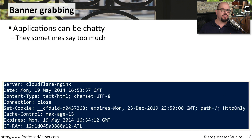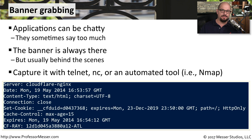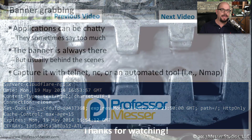Some applications provide a lot of information about themselves when you first connect to them — their name, what version of software they're running, and more information about the server they're running on. These are called application banners. They're usually always there but we don't normally see them, as it happens behind the scenes over the network so the client and server can communicate and know who they're talking to. But you can capture this data by grabbing the packets themselves, or by using Netcat, NC, Nmap, and a number of different security tools to capture these banners.